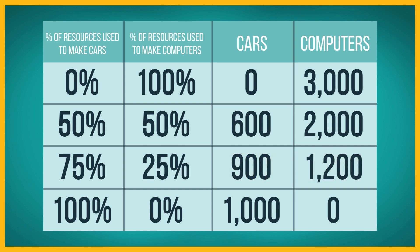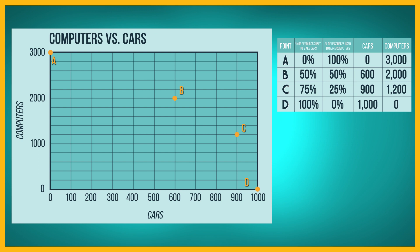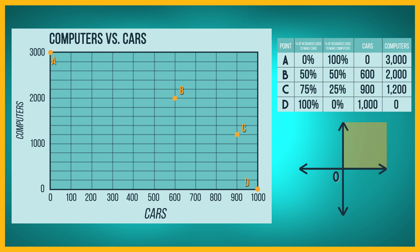We can summarize these combinations in a table. The rows of the table show the combinations of cars and computers possible as the economy reallocates its resources from 100% for computers to 100% for cars. We can plot these points in a graph. Since the number of cars and computers cannot be negative, we will use only the top-right quadrant of the normal x-y graph. When we measure computers on the vertical axis and cars on the horizontal axis and connect the four points with straight lines, we obtain this graph.